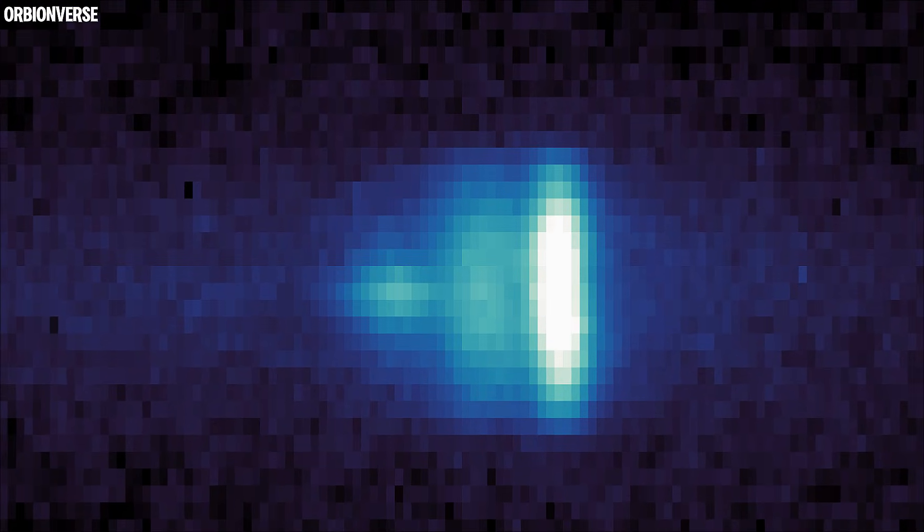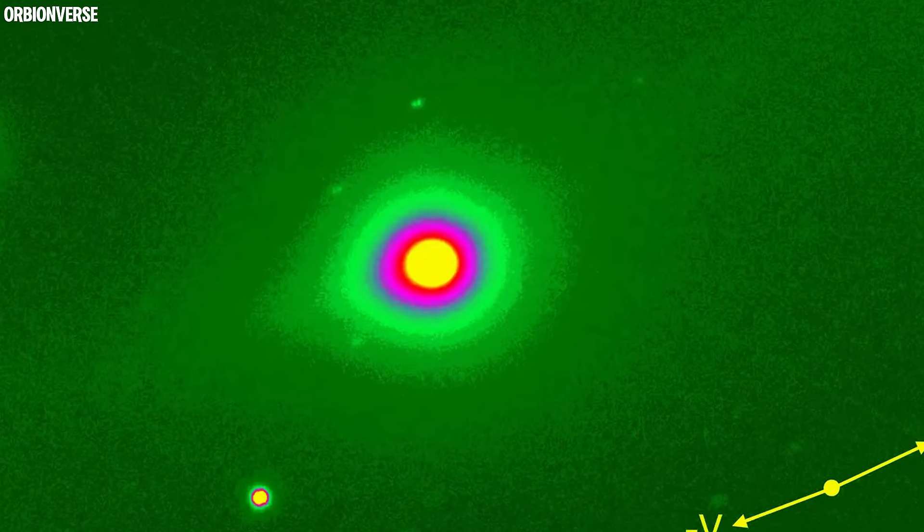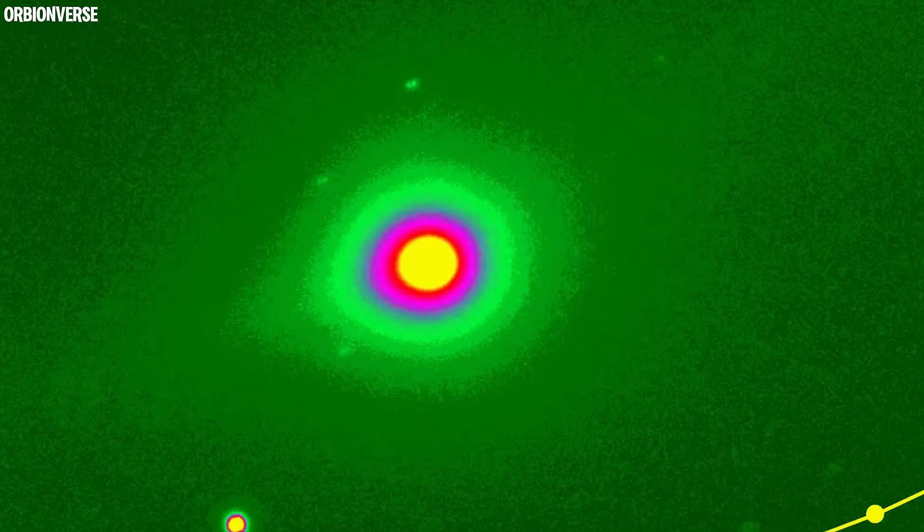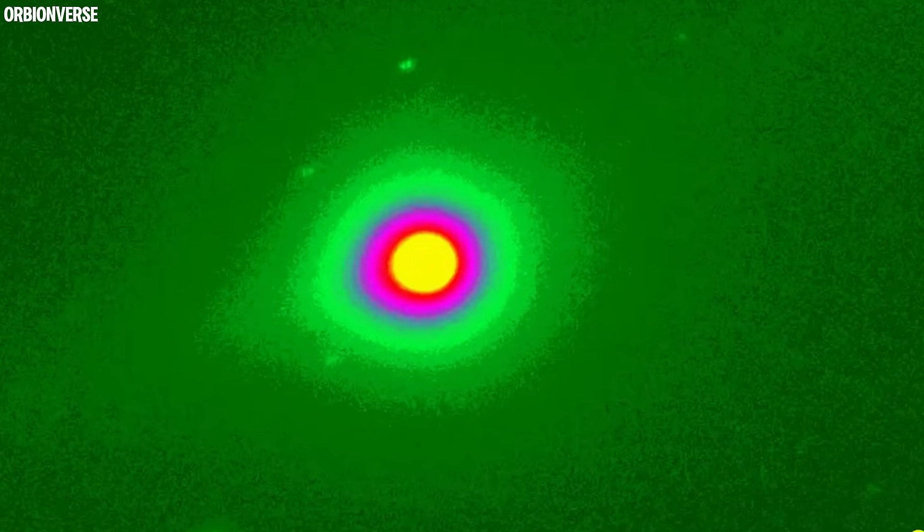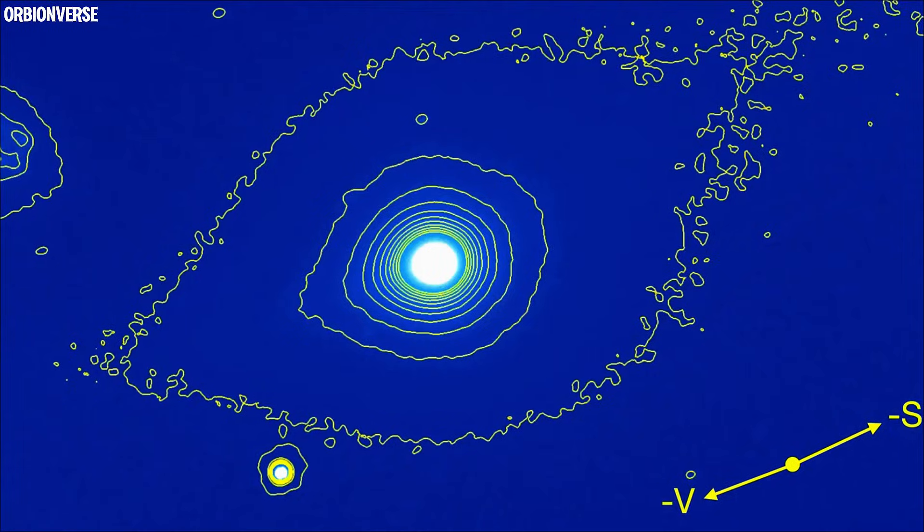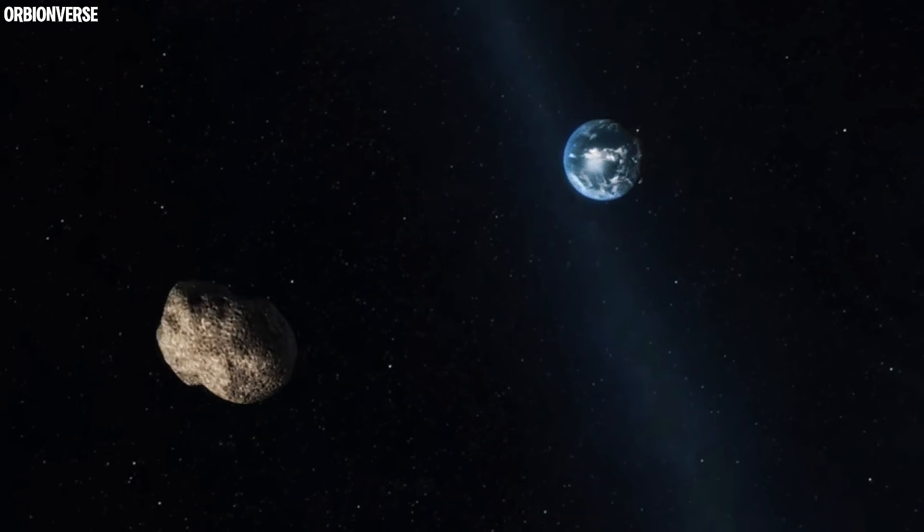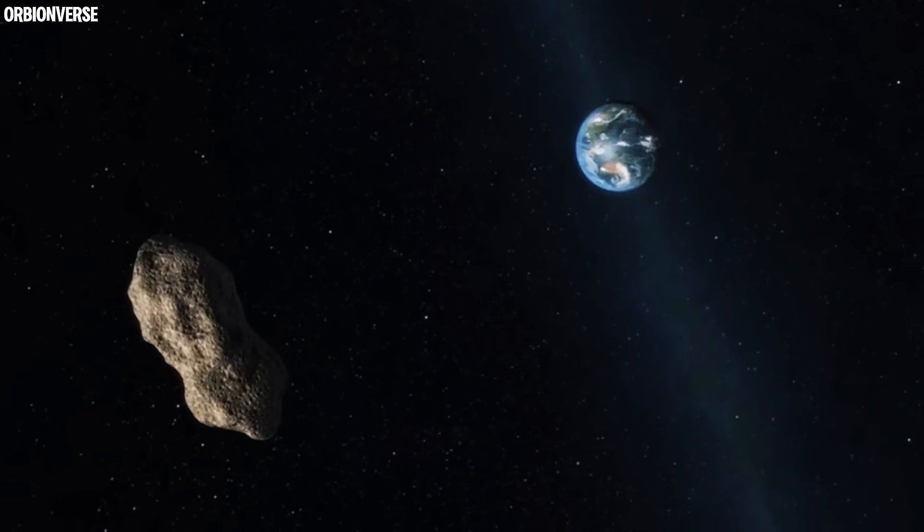But the strangest part comes from the colors inside the coma. When researchers lowered the green hue and raised the black point, they discovered flashes of red, streaks of blue, and bursts of multicolored light within the core. Almost like the inside was reacting to something. This is not typical comet behavior. Not even close.